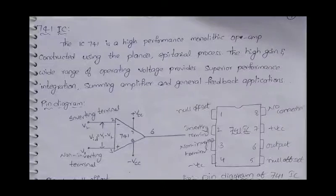In the last class we discussed about the DC characteristics and AC characteristics of an operational amplifier. In DC characteristics we discussed about input bias current, input offset voltage, input offset current and thermal drift. In AC characteristics we discussed about the slew rate and the frequency response of an operational amplifier. In today's class we are going to discuss about the IC 741.